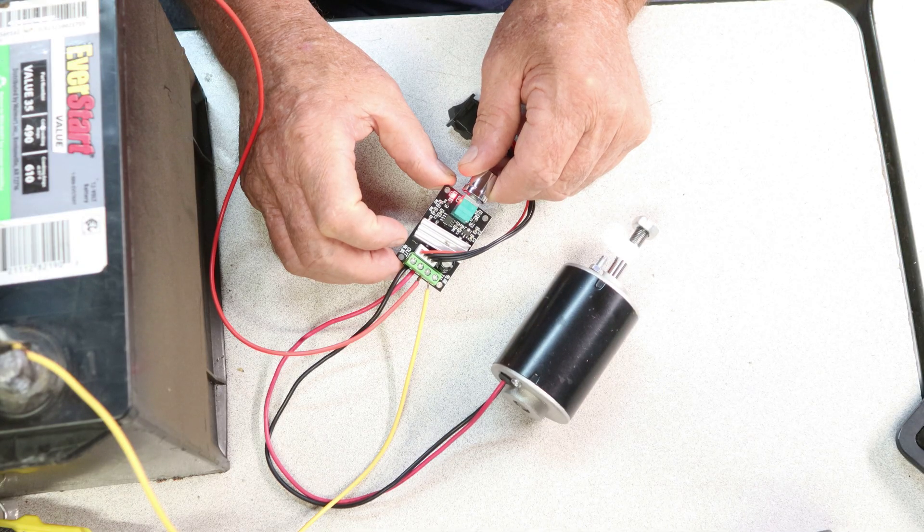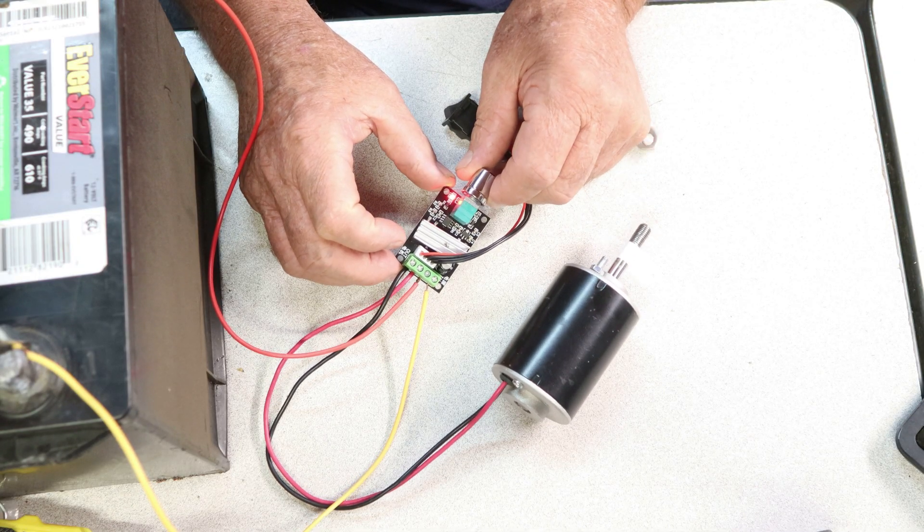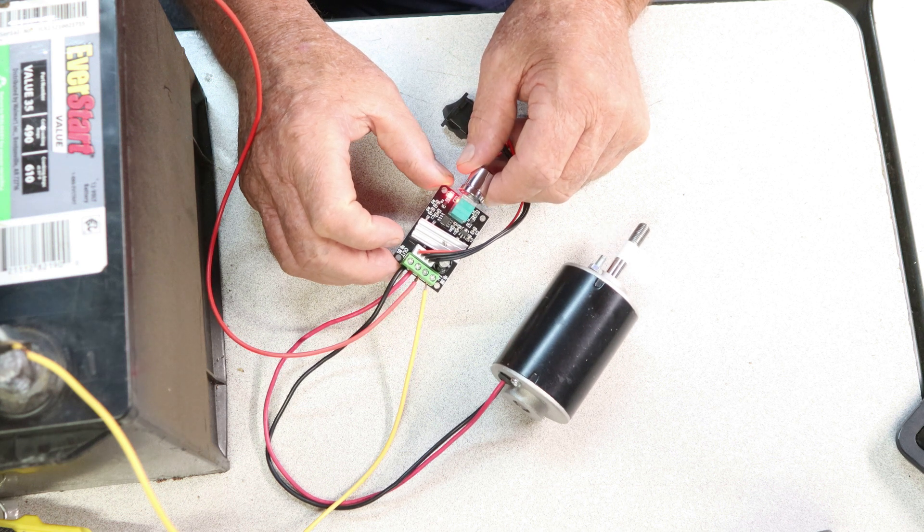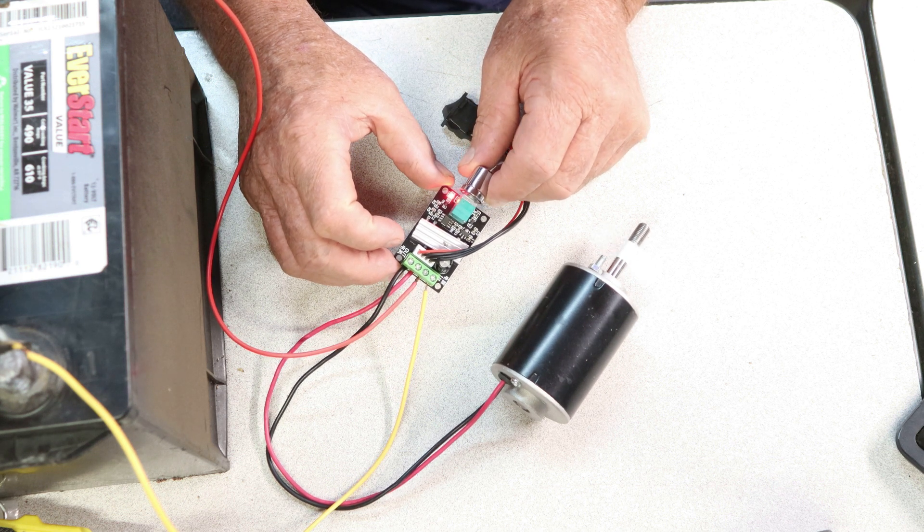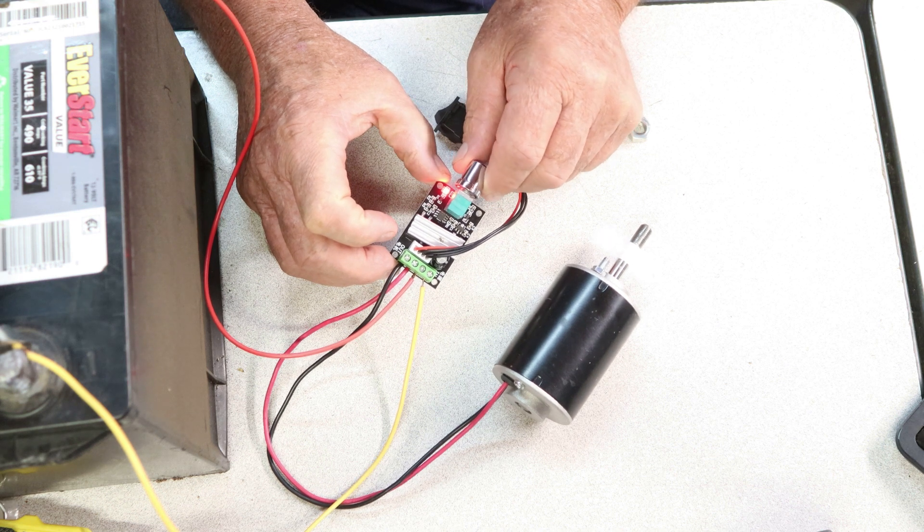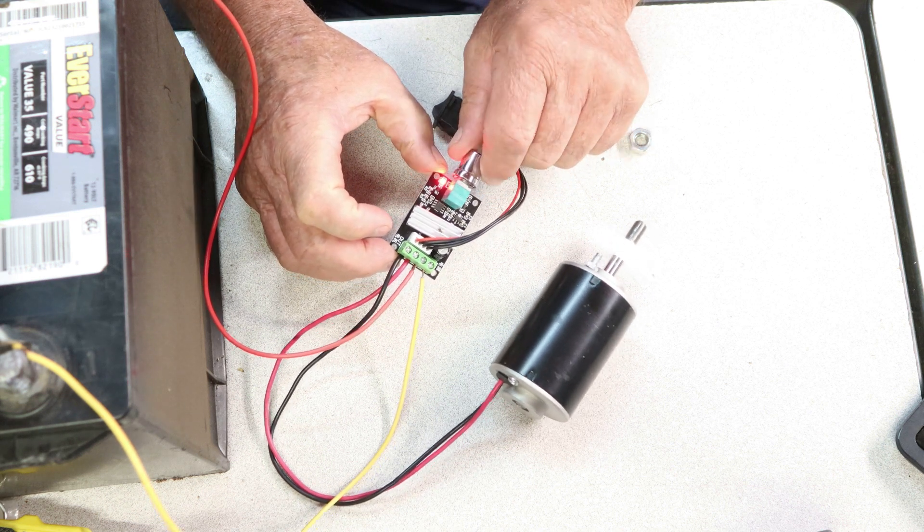We're going to crank the potentiometer on. You'll see the light light up and you'll see the motor. Crank it up. Slowly gains speed. We'll crank it up a little bit more, a little bit more. It spins pretty good. Knocked that nut off there.